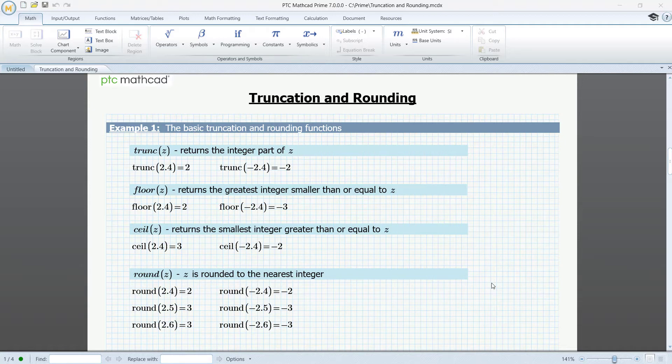Floor will map to the greatest preceding integer. Ceil will map to the smallest succeeding integer. And round will map to the nearest integer, where the middle value is always rounded up.